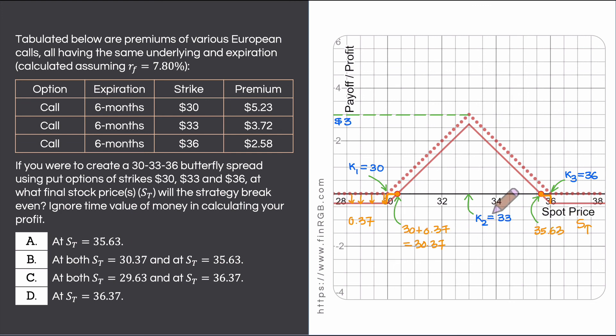This graphical approach very quickly tells us that break even happens at 30.37 and 35.63. This solved example was about a butterfly spread.